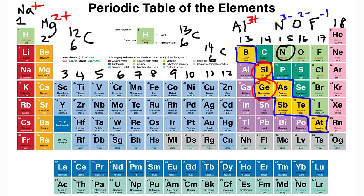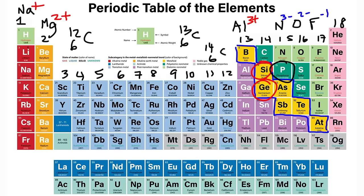Nitrogen is found in the air — almost 79% of air is nitrogen. About 20% of air is composed of oxygen. Then we have phosphorus, sulfur, selenium, and Te — tellurium.